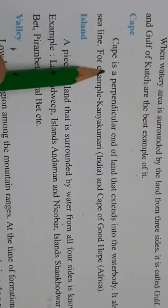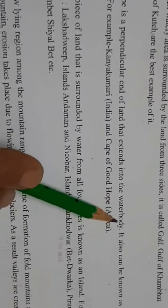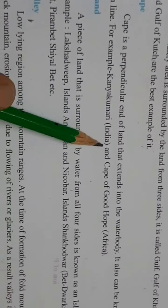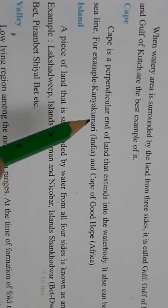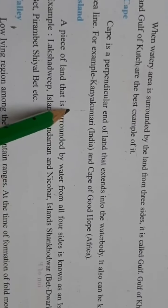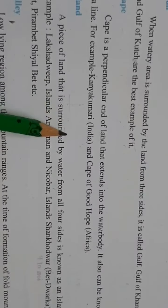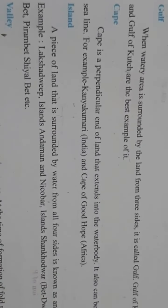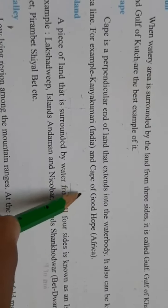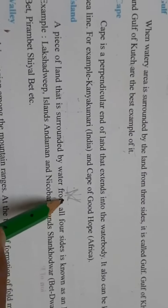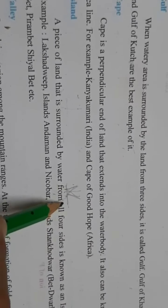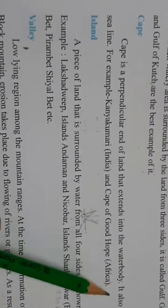Now comes cape. Cape is a perpendicular end of land that extends into a water body. It can also be known as a sea line. For example, Kanyakumari in India and Cape of Good Hope in Africa. Yani cape aisa area hai land ka jo water bodies mein extend kerta hai — water body ke andar chahta hai. Iska best example hai Kanyakumari, jo south mein hai — woha se aise karke phir south mein complete ho jaata hai India, aur phir niche Sri Lanka ajaata hai. So that part is called a cape. And Cape of Good Hope in Africa.